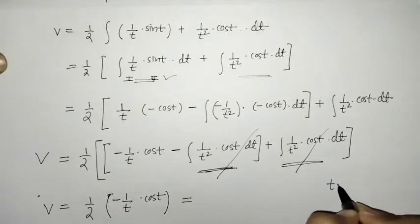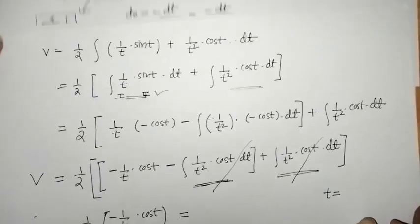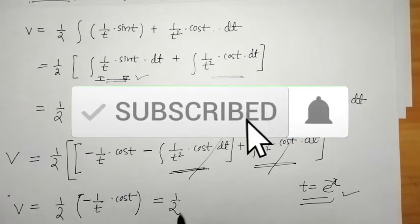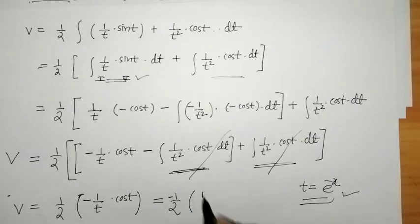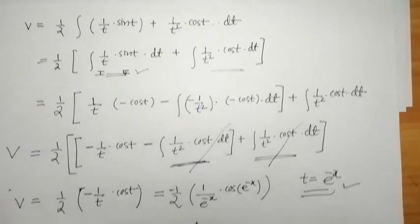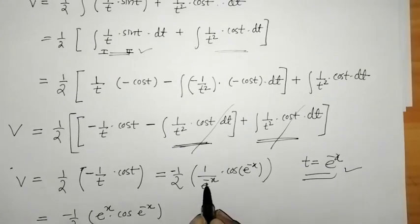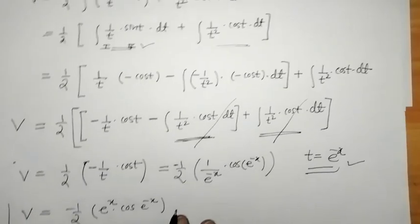Re-substituting t = e^(-x), we get v = (1/2)*e^x*cos(e^(-x)). Both integrals were never-ending, but applying integration by parts caused them to cancel, giving us the required value of v.